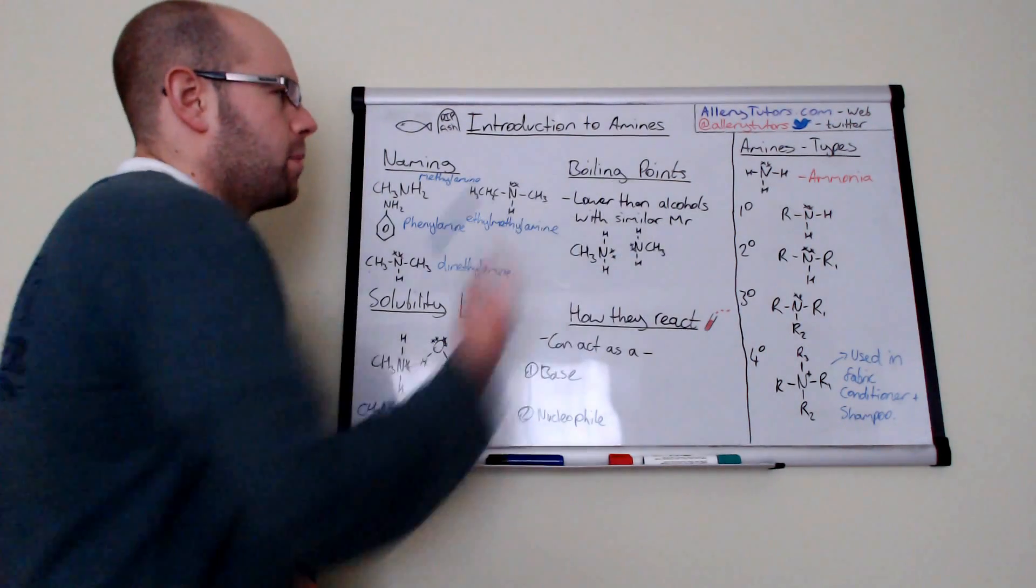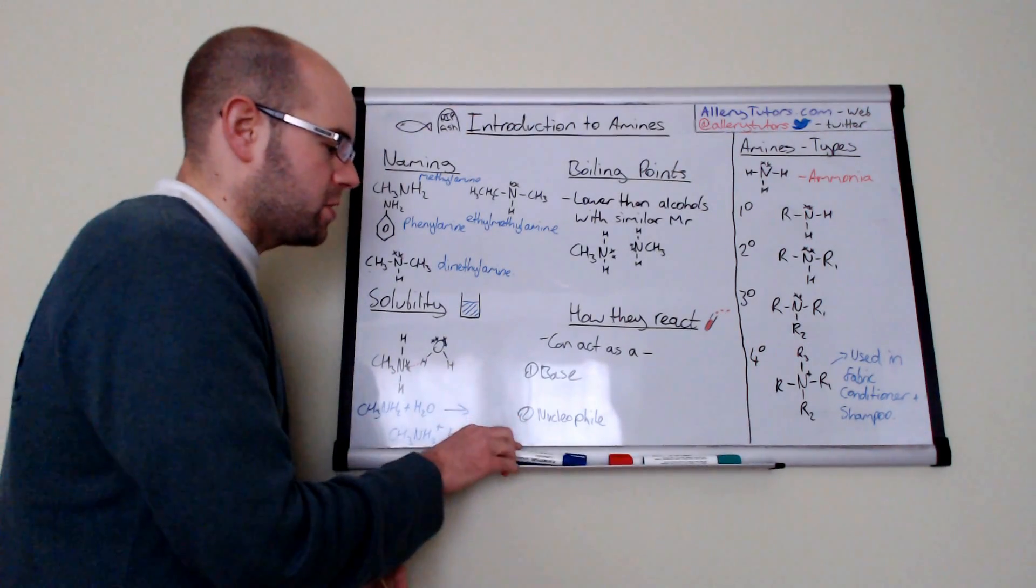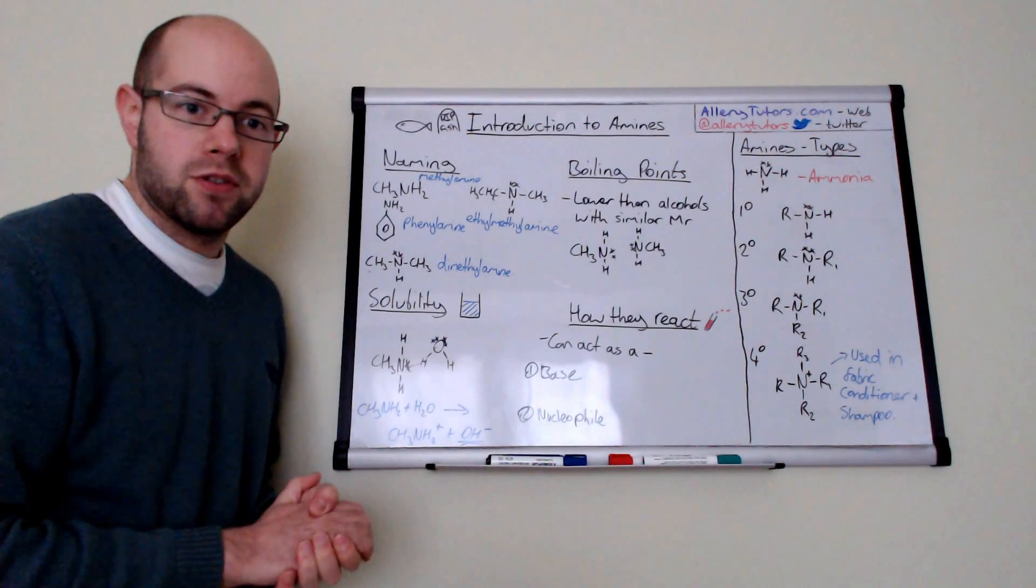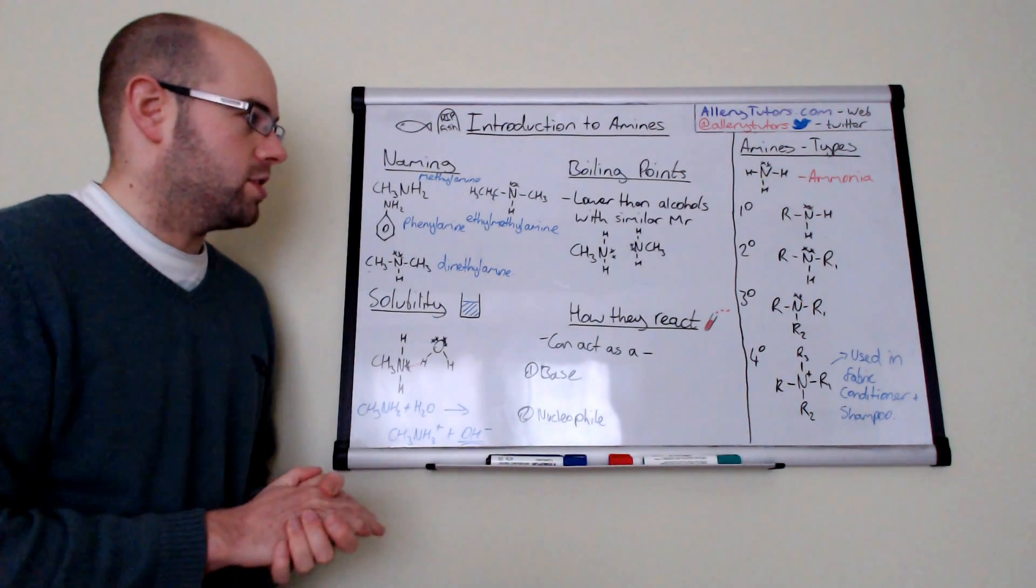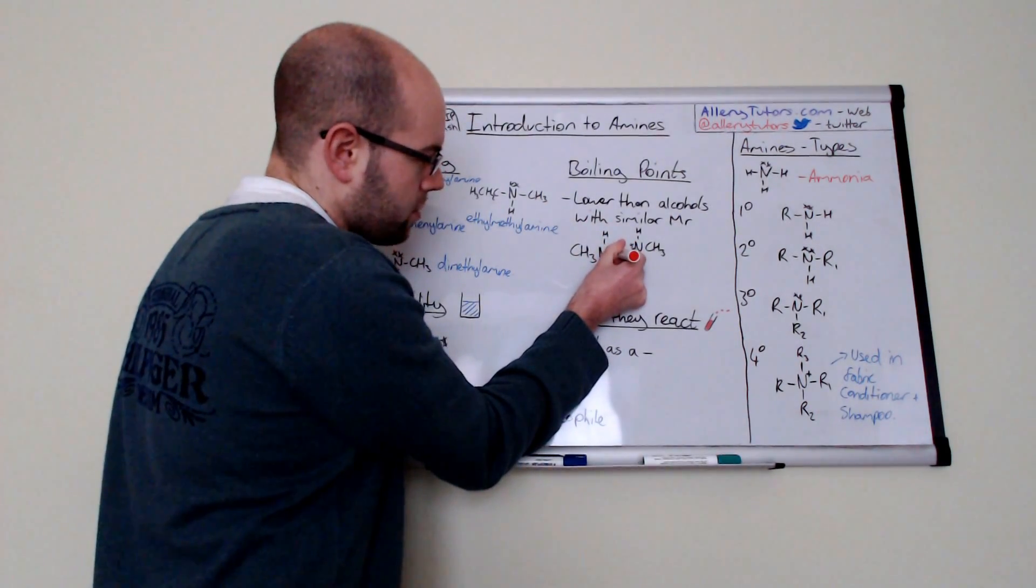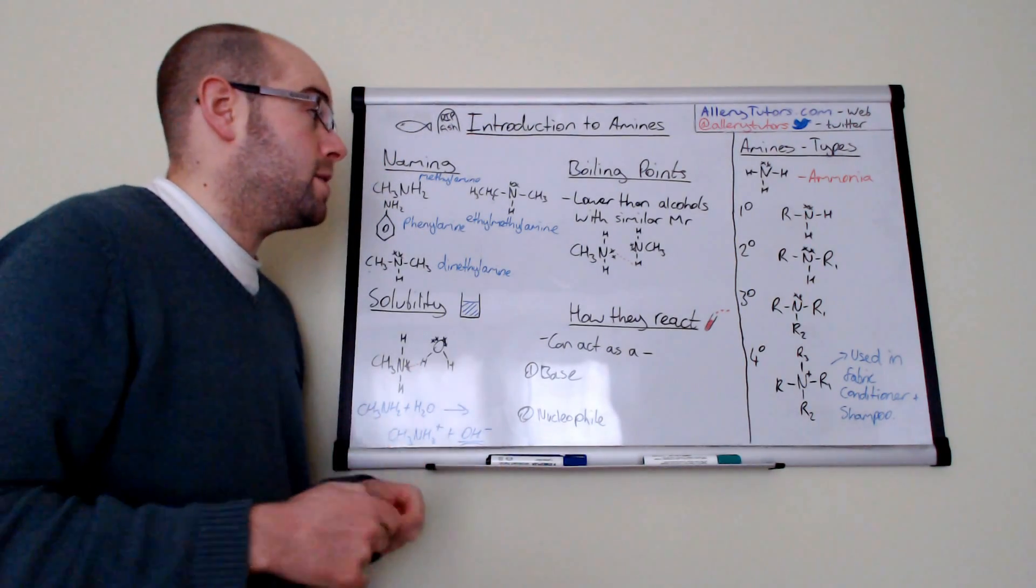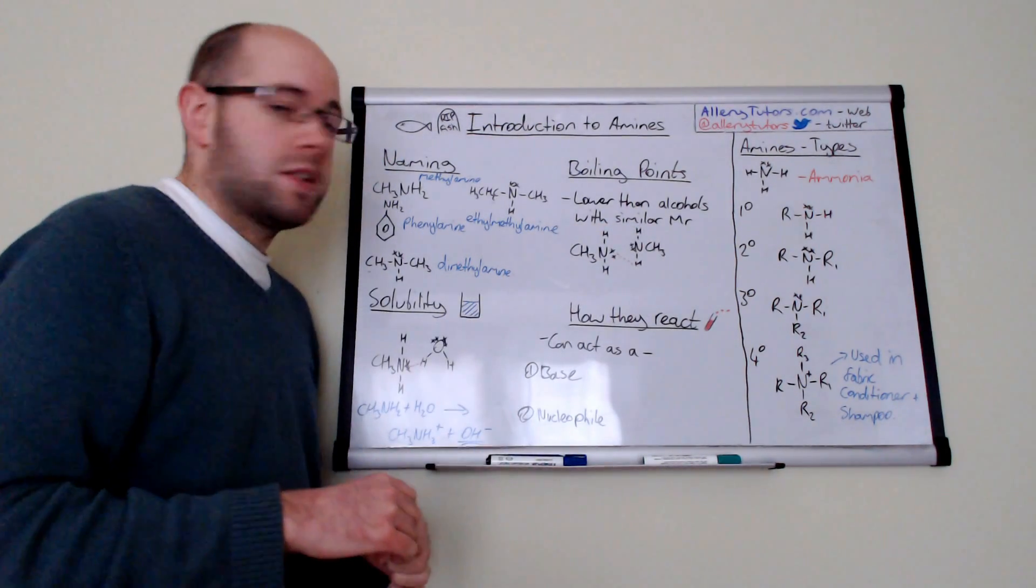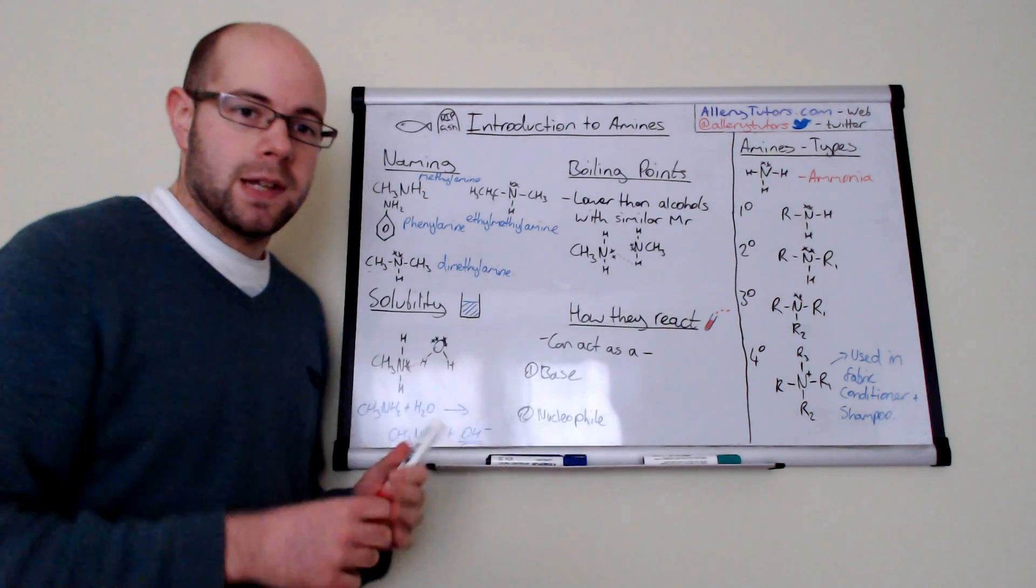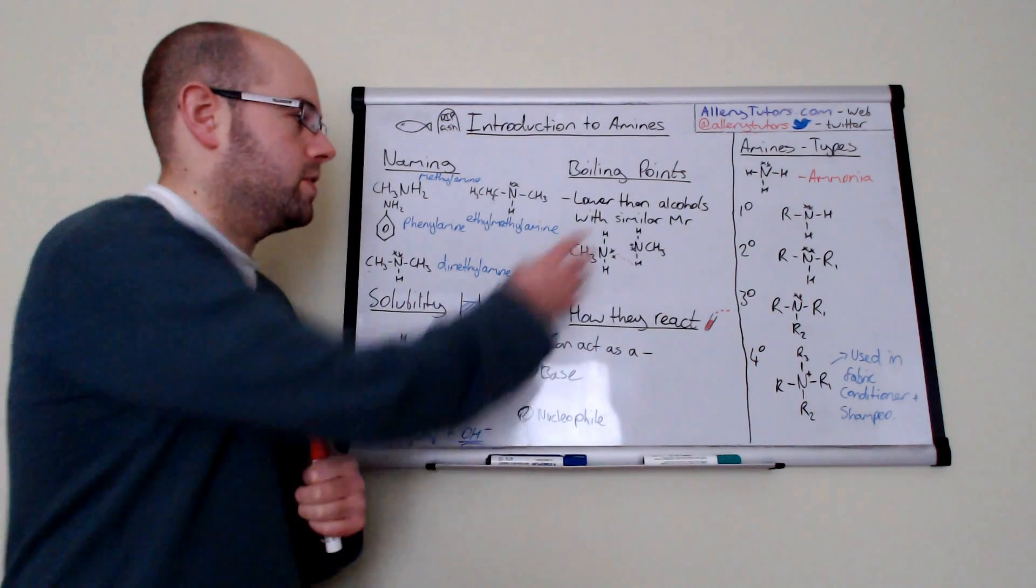We're then going to look at boiling points. And for similar reasons as solubility, boiling point is very much dependent on the intermolecular forces that are between the molecules. Now amines obviously can hydrogen bond because they've got a nitrogen and you've got a hydrogen on the other amine. So we've got from the lone pair of the nitrogen to the hydrogen on the other amine. So these are actually relatively high boiling points. But if you have to make a comparison between amines and alcohols for example.